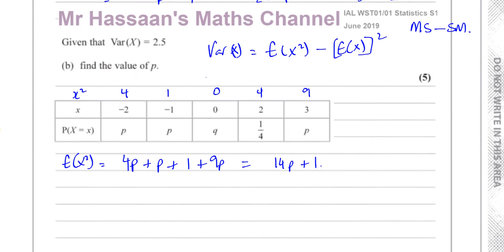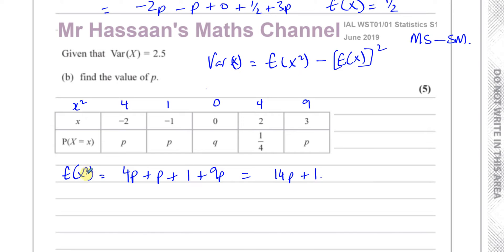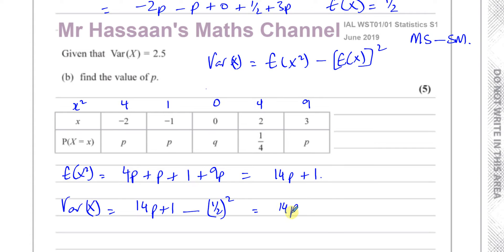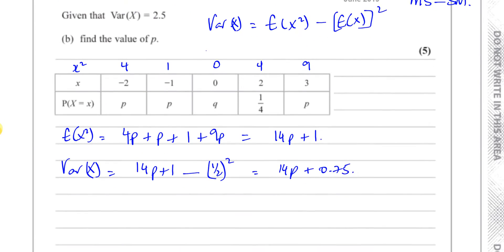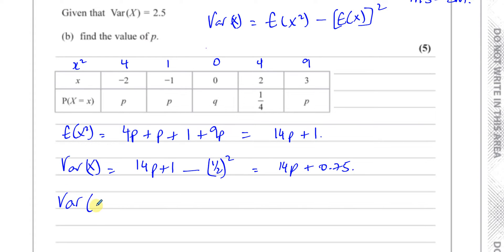So the expected value of X squared — the mean of the squares — is 14P plus 1. The variance of X is the mean of the squares minus the square of the mean: that's 14P plus 1 minus one half squared. One half squared is one quarter, so 1 minus a quarter is three quarters, which is 0.75. So the variance of X is 14P plus 0.75. And we know the actual variance of X is 2.5.